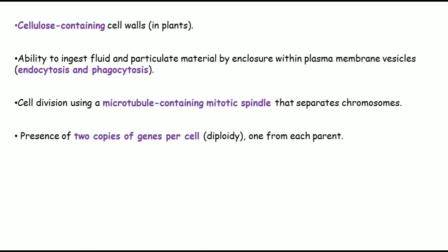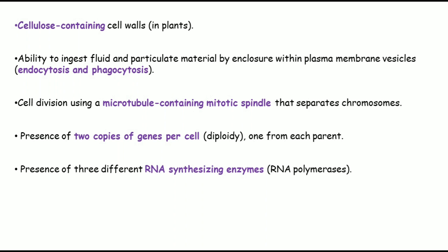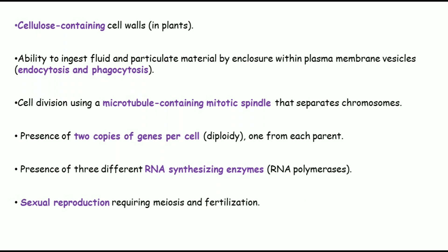Eukaryotes have two copies of each gene per cell, making them diploid organisms — humans, for example, are 2n. Each gene exists in two copies called alleles. Eukaryotes also have three different RNA-synthesizing enzymes: RNA polymerase I, II, and III, whereas prokaryotes have only one type of RNA polymerase. Eukaryotes divide by sexual reproduction requiring meiosis or fertilization, while prokaryotes do not have functioning sexual reproduction.